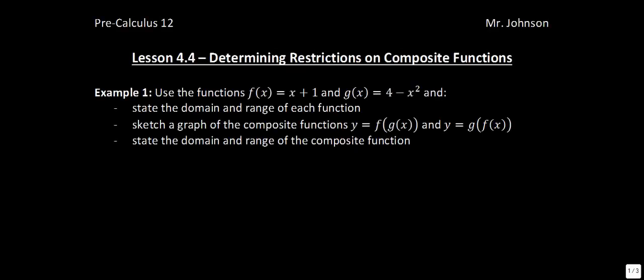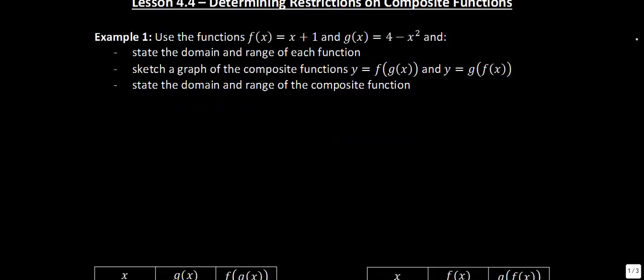This is lesson 4.4, Determining Restrictions on Composite Functions. In this lesson the focus is on how to sketch graphs and determine equations of composite functions and then to identify the appropriate restrictions. We're going to get started right into examples. The first example says use the function f of x equals x plus 1 and g of x equals 4 minus x squared. The first thing we need to do is state what the domain and range is.